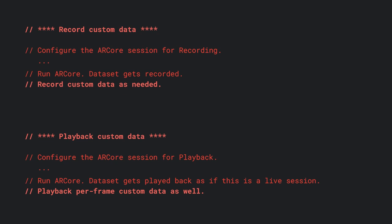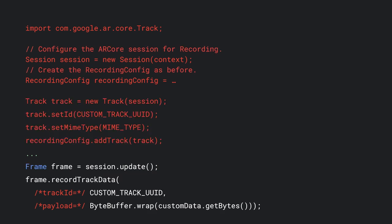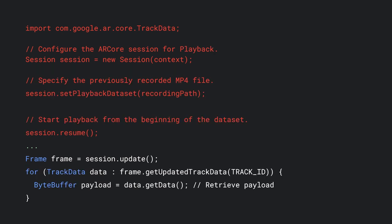One of the more powerful examples is recording an MP4 and also the UI tap data directly into a custom track to access later. Here is how you would record custom data in ARCore: you would create a data track using a custom UUID and then set a string MIME type on this track. You would add this track to the recording config you created. While the ARCore session is in progress, you can record your custom data on the AR frame as desired. Similarly for playback, while the ARCore session is in progress, you can play back your custom data on the AR frame as desired.